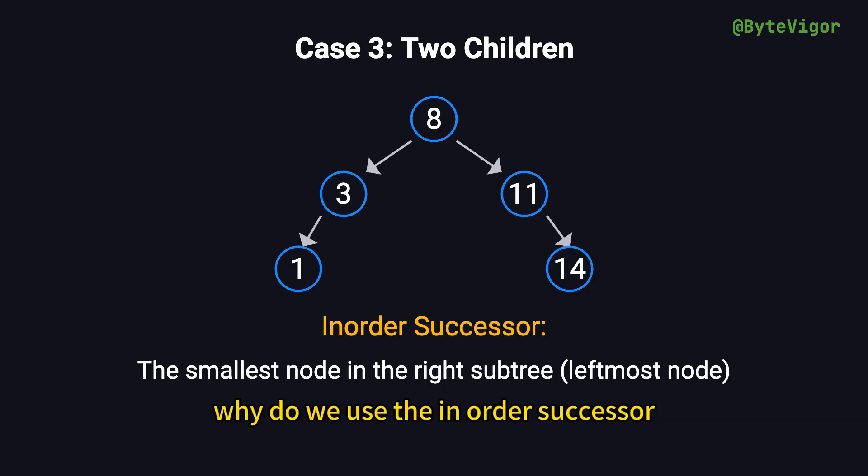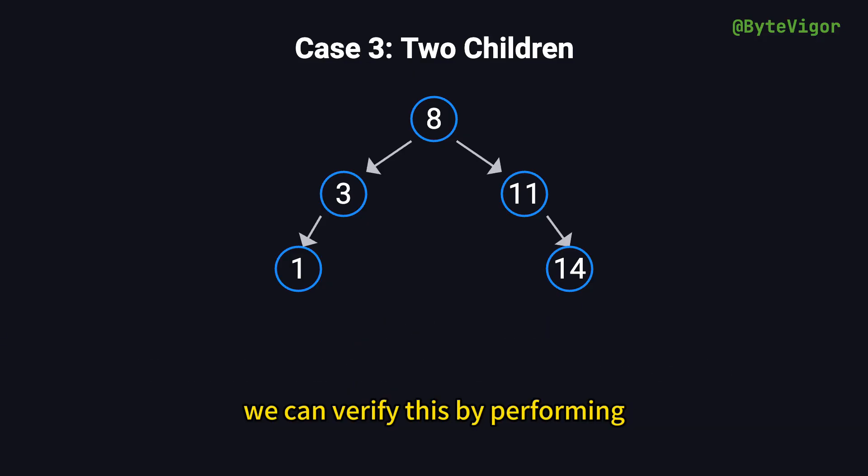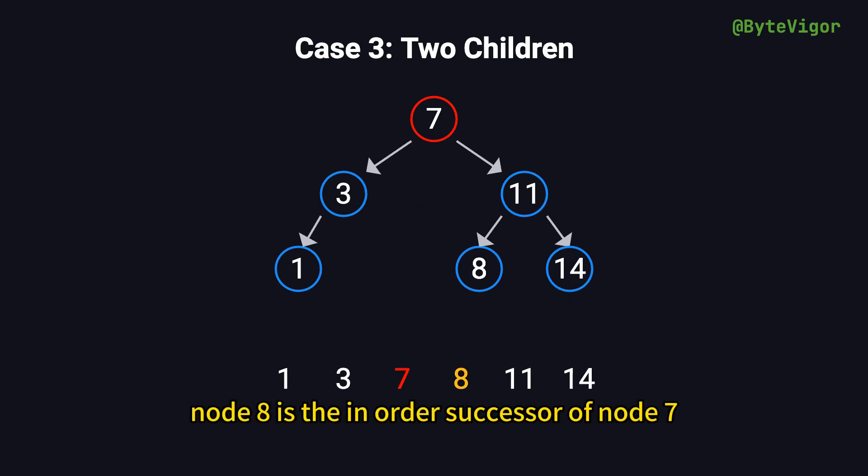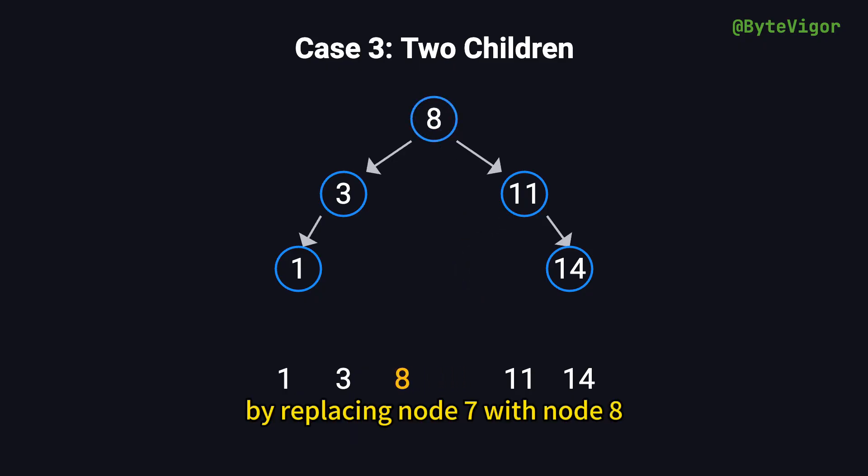Why do we use the in-order successor? We can verify this by performing an in-order traversal of the binary search tree, which produces a sorted sequence of node values. Before deleting node 7, an in-order traversal would result in 1, 3, 7, 8, 11, 14. In this sequence, node 8 is the in-order successor of node 7. By replacing node 7 with node 8, we preserve the binary search tree's properties.